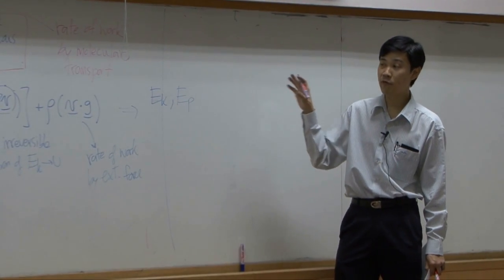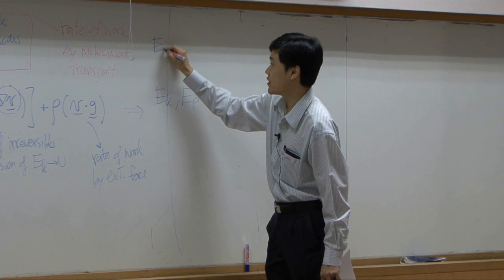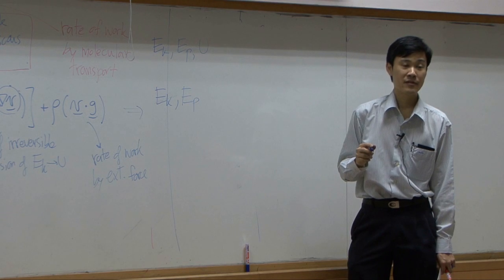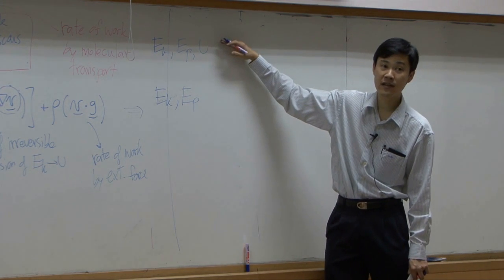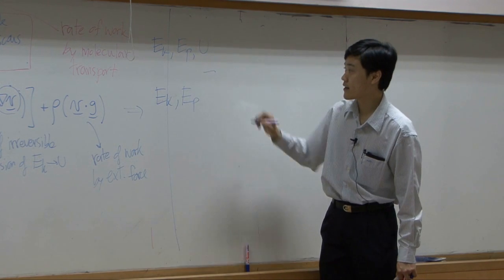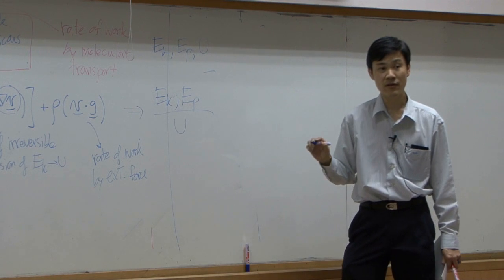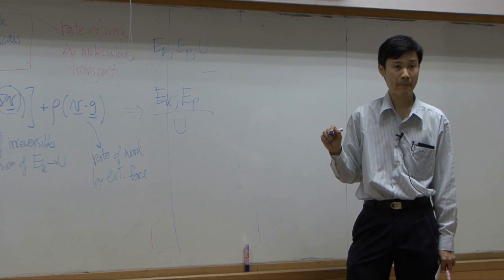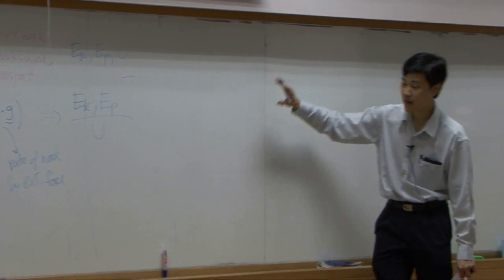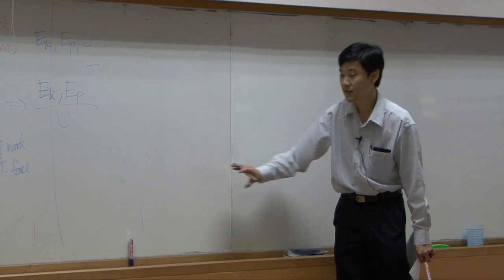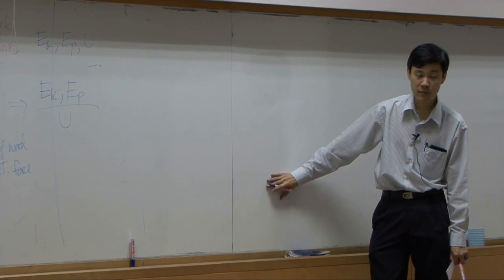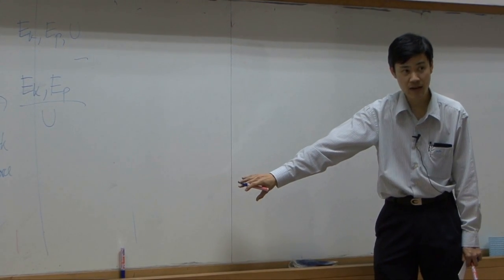So this equation is related to kinetic energy and potential energy only, whereas the equation we derived earlier has three forms of energy: Ek, Ep, and U. Therefore, if you take the equation we first derived and subtract this equation from it, the result will be an equation that gives you internal energy only. This is just like the overall energy balance: you have mechanical energy balance and then thermal energy balance. If you want the equation for thermal energy, you take the overall minus the mechanical energy balance.